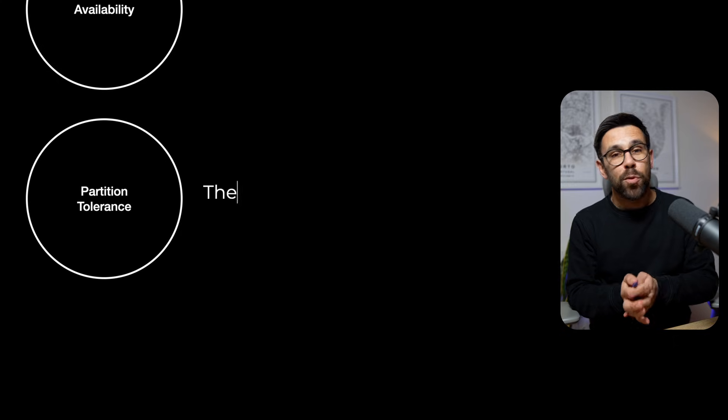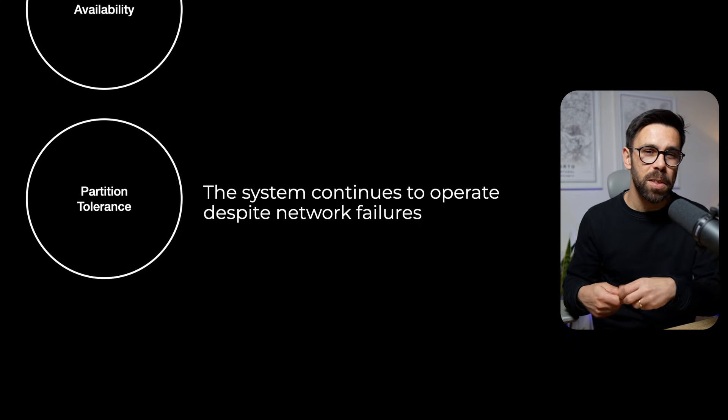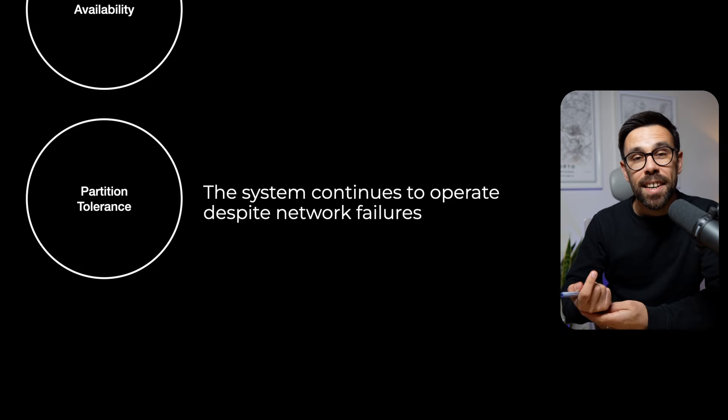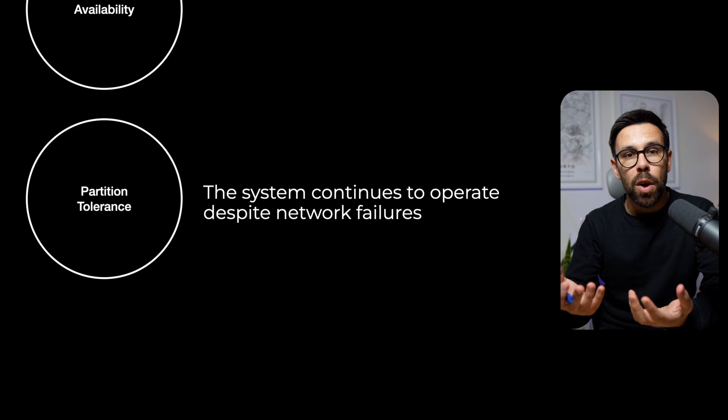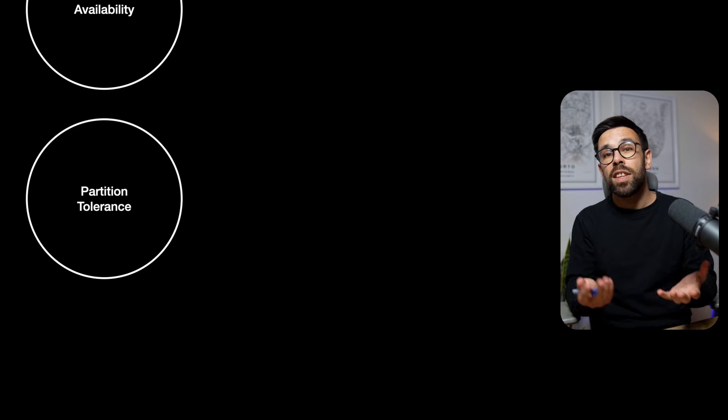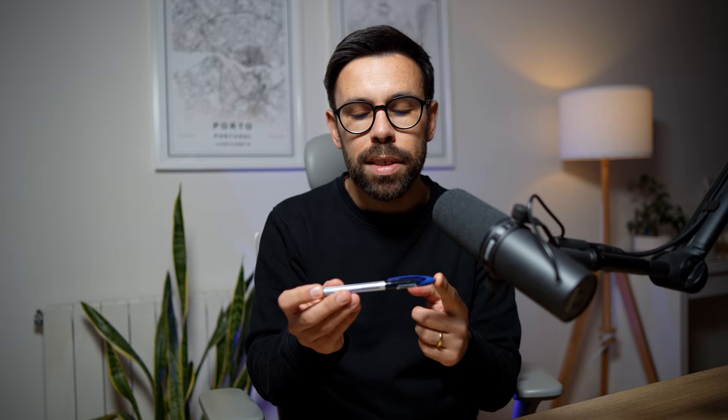Then we have partition tolerance. While consistency and availability are quite obvious, partition tolerance is often the one that isn't immediately understood. The idea is simple: partition tolerance is the availability of the system when something goes wrong between the communication of two nodes. Imagine you have two servers with a network between them, and at a given moment that network goes out. If your system is capable of keep operating — even when those two servers don't have communication between them — you have partition tolerance. According to the CAP theorem, you can only pick two of these three.